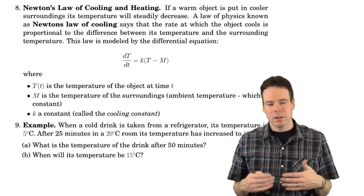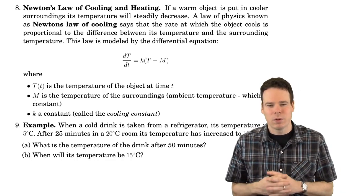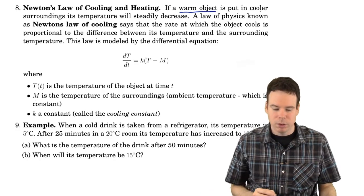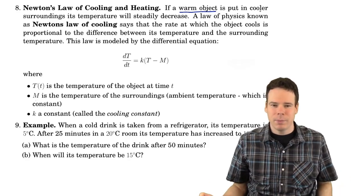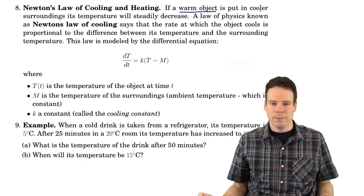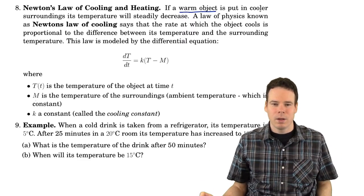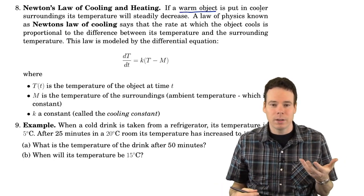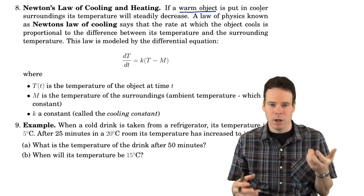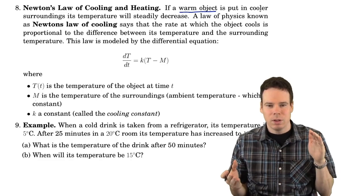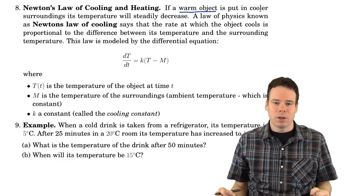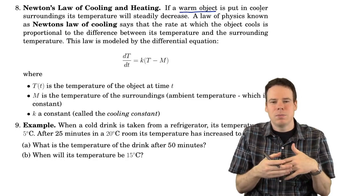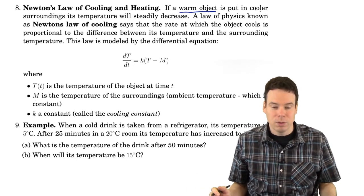We think about what the change in temperature of an object may be when it's sitting in an environment. If we have a warm object in cooler surroundings, we expect the temperature to drop. How fast? If the object is really hot relative to the environment — a big temperature difference — we expect the temperature to drop rapidly. If the temperatures are close to each other, we don't expect as rapid a change. This is essentially what Newton's law of cooling is saying.